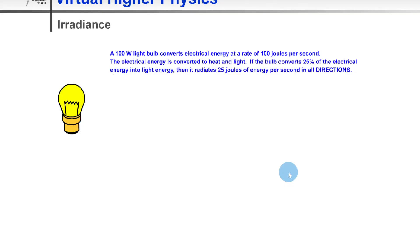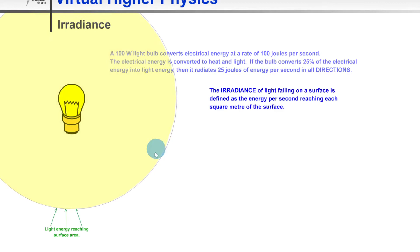If the light is being emitted in all directions from this point source, then the light is going to form a sphere. So if we look here, you'll see that we have a sphere formed around the point source. It says that the irradiance of light falling on a surface is defined as the energy per second reaching each square meter of the surface.